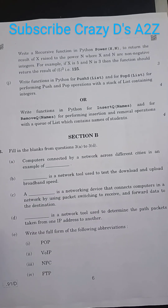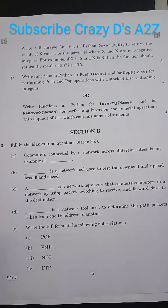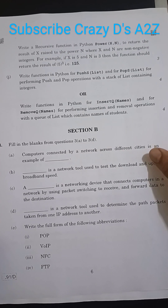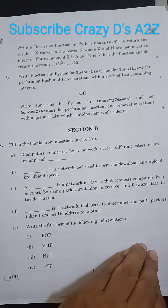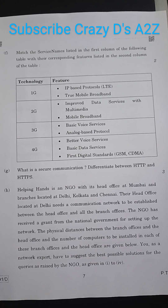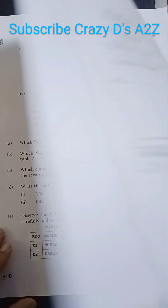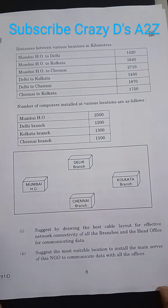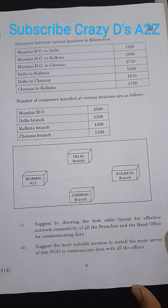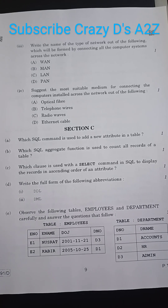Then comes Section B, where question three is coming. This is the third question having five parts — then f, g, and h coming for question three only.